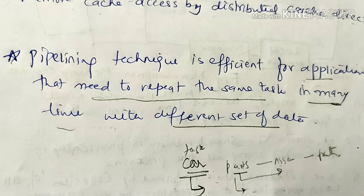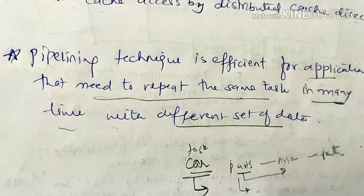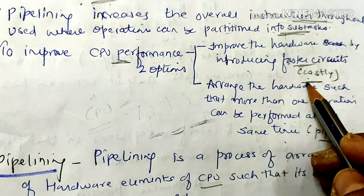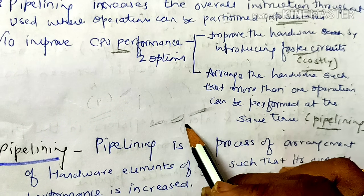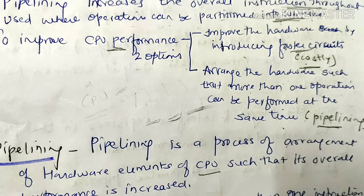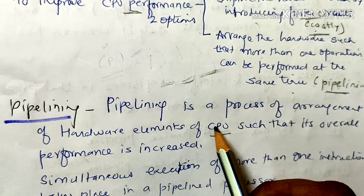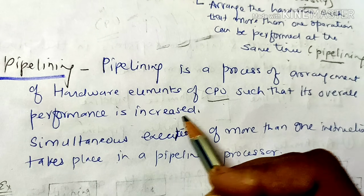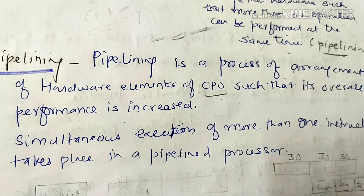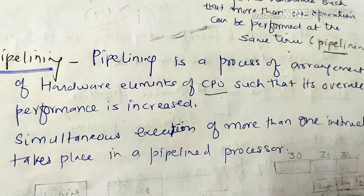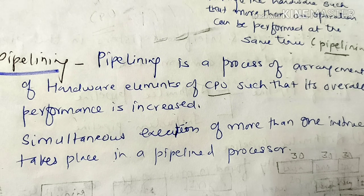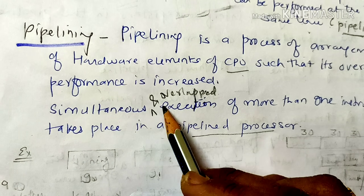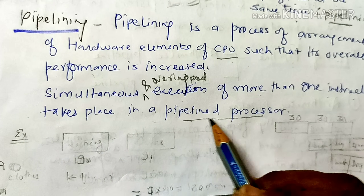Manufacturing companies use the pipeline technique. We can also increase circuit speed, but it is a costly technique since we arrange hardware. Pipelining is a process of arrangement of hardware elements of the CPU such that its overall performance is increased. We arrange CPU components so that the CPU is busy the maximum amount of time, using hardware in an overlapping way. This allows simultaneous and overlapped execution of more than one instruction in a pipeline processor.